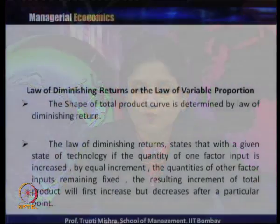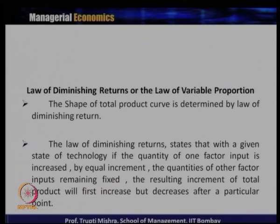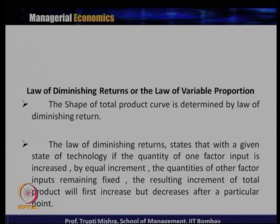Even if labor increases, at a certain point output stops changing or even decreases. The logic behind this relationship between total product, marginal product, and average product is explained by the law of diminishing returns — also called the law of variable proportions — which is behind the shape of the total product curve.